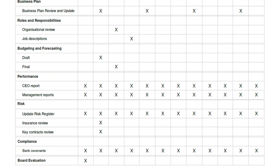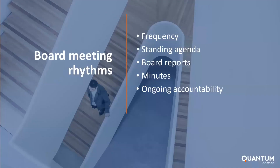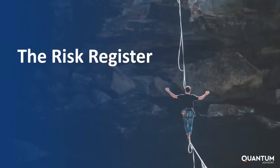The governance work schedule sets out key projects to be undertaken each year to ensure the board delivers. However, planning without accountabilities is not enough — you need a clear board meeting rhythm to ensure a culture of accountability. Compliance and risk management is one of the four pillars of governance, and we've highlighted the need to maintain a risk register updated on a regular basis.